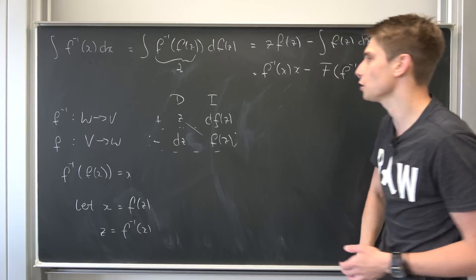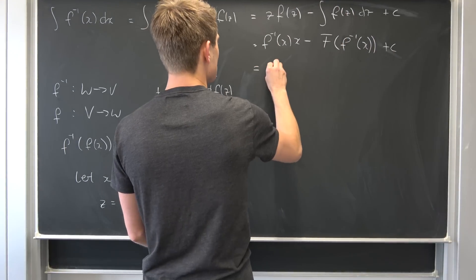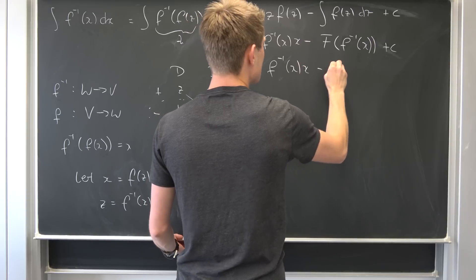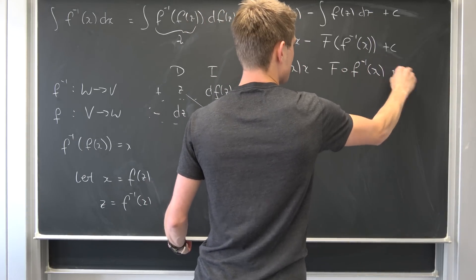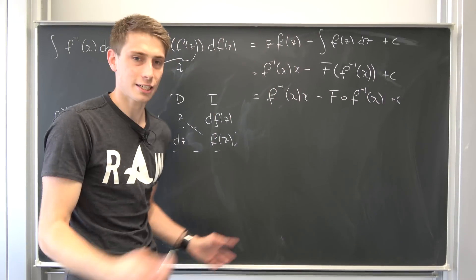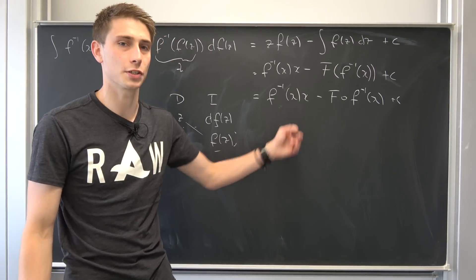You can rewrite this a little bit more if you want, this last term right here. So this is f to the minus 1 of x times x minus F composed with the inverse function of x plus some arbitrary constant c. And just like I said in the beginning, we can make use of this thing right here.